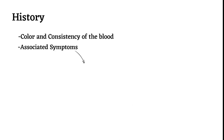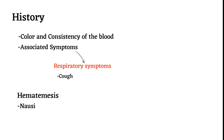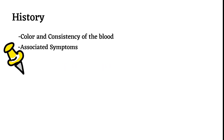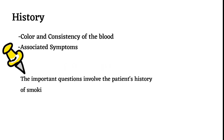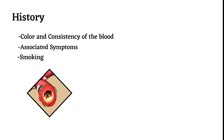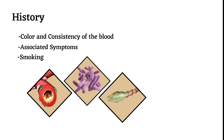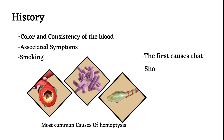Second, associated symptoms are usually respiratory symptoms such as a cough, and others related to the cause. This is different from hematemesis, which is associated with nausea or vomiting. An important question involves the patient's history of smoking and other cancer-related risk factors. Because bronchitis, tuberculosis, and bronchiectasis are some of the most common causes of hemoptysis, these are usually the first causes that should be excluded.